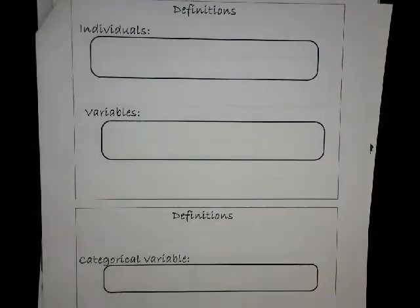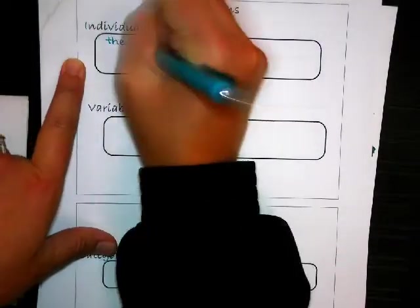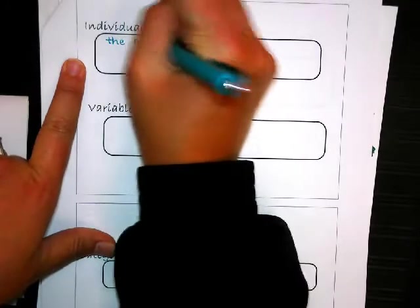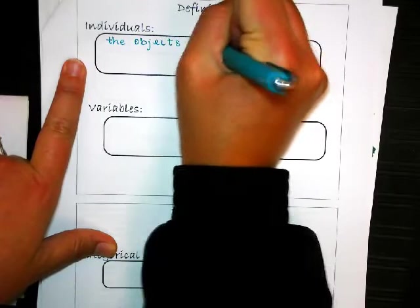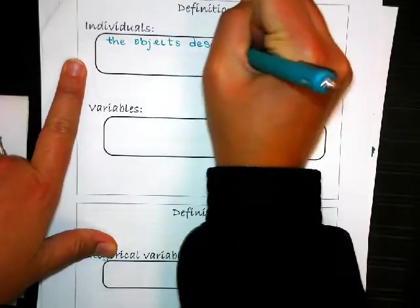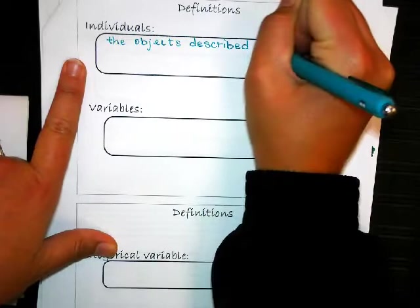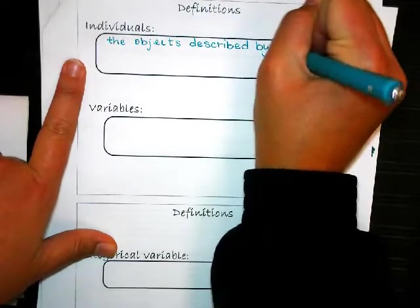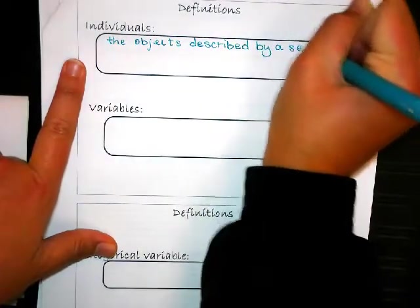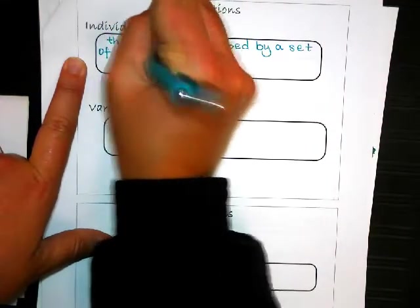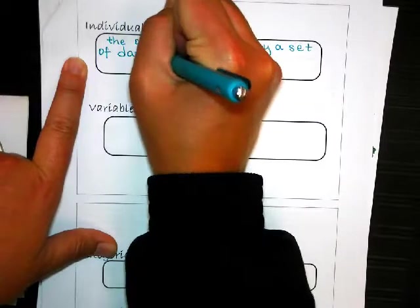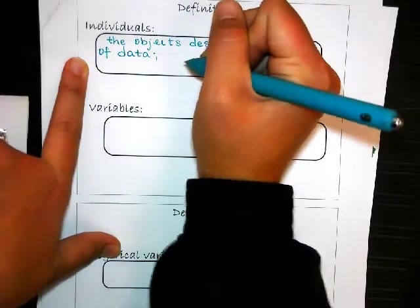All right, so our first definition is individuals, and that would be the objects described by a set of data. So that could be people, animals, or if I really want to be general, it could be things.